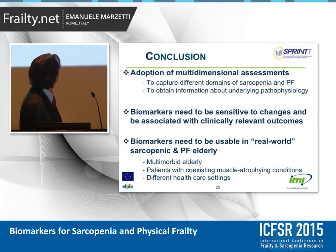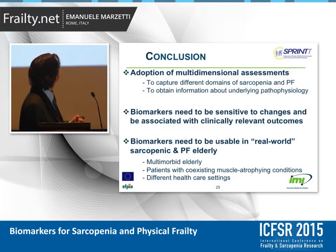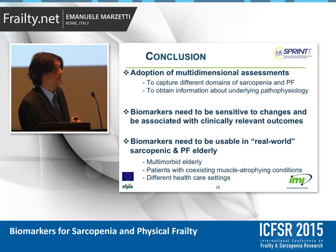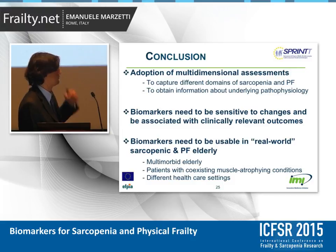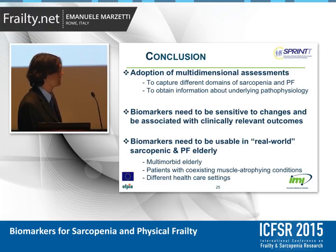To conclude: with the current state of science, the only recommendation is to adopt a multivariate clinical assessment to capture different domains of sarcopenia and physical frailty and to obtain information about functional physiology. Biomarkers must be clinically relevant and sensitive to changes. More importantly, they need to be validated in real-world sarcopenic and physical frailty populations, such as multimorbid patients with coexisting conditions, and across different healthcare settings.